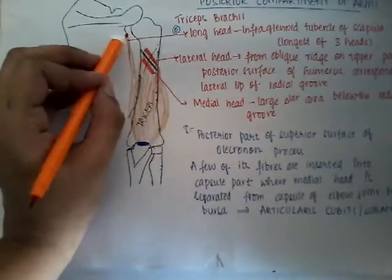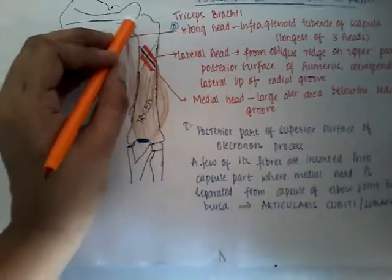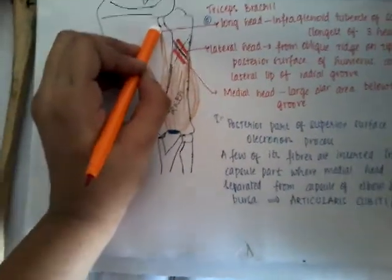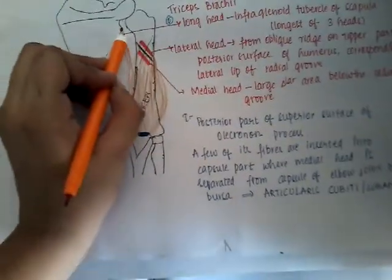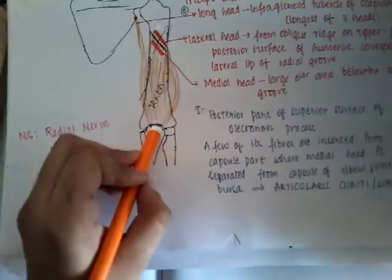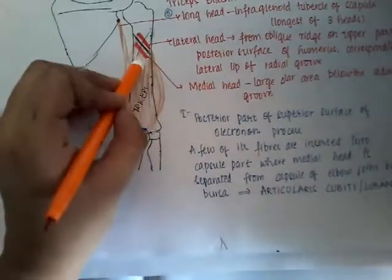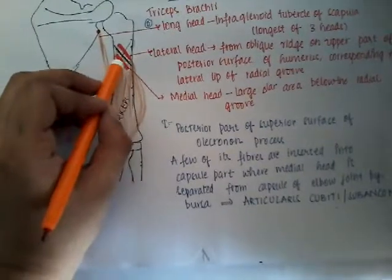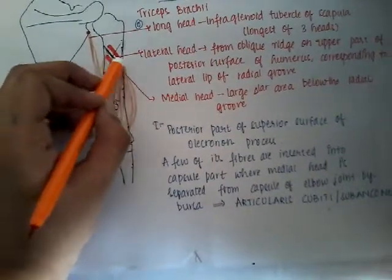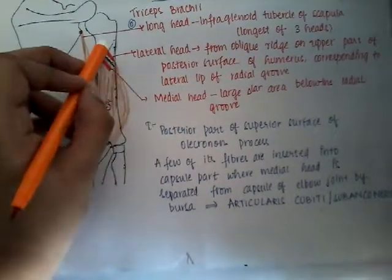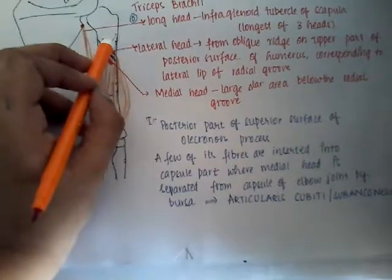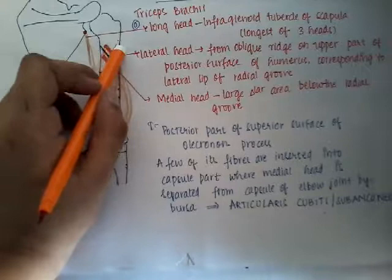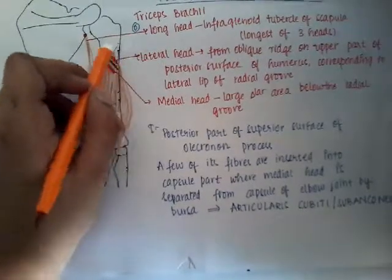The long head arises from the infraglenoid tubercle — this is the glenoid fossa and this is the infraglenoid tubercle. It originates at the infraglenoid tubercle and comes downward, combining with the medial head. The medial head originates from the triangular area just below or medial to the radial groove, whereas the lateral head originates from the oblique ridge just above or lateral to the radial groove.